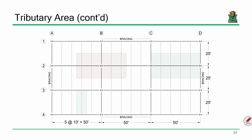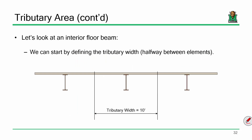What is the tributary width of this beam? It's 10 feet, because each of these beams are spaced 10 feet on center. From one beam to the next is 10 feet — so 5 feet over, 5 feet over, equals 10 feet. If I'm looking at an individual floor beam, its tributary width is 10 feet. It doesn't matter if it's a steel beam or concrete beam — this load distribution is the same.